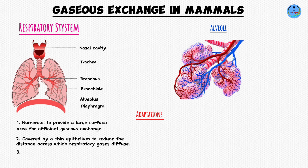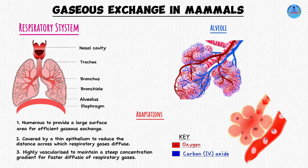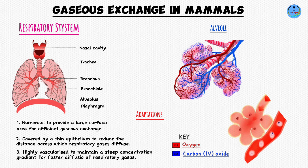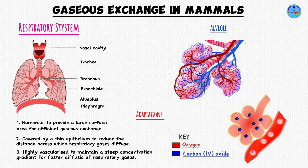The third characteristic: alveoli are highly vascularized, meaning they have a dense network of blood capillaries surrounding them. Blood capillaries transport substances — in this case, oxygen and carbon dioxide. Oxygen and carbon dioxide diffuse from the alveoli into the blood vessels and vice versa. Having many blood capillaries means faster transportation of the gases. Immediately the gases diffuse into the blood vessels, they are transported away, creating a steep concentration gradient.